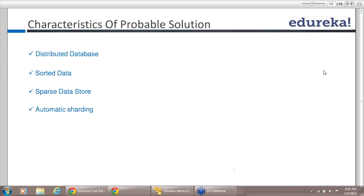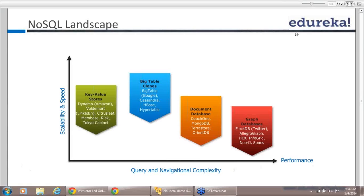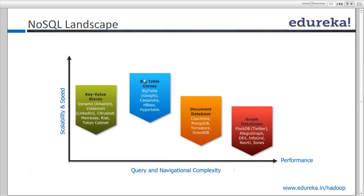So we have a distributed database with sorted data. This is a high-level classification of different kinds of NoSQL databases, and HBase is one of them. You can divide NoSQL databases into four groups: key-value store, BigTable, document database, and graph database. In key-value store, everything is stored as key-value pairs. BigTable, or BigTable clones, is an implementation of the BigTable paper. Google published the BigTable paper, and HBase is one implementation of it. Cassandra and HyperTable are other implementations.